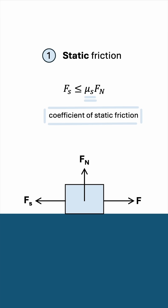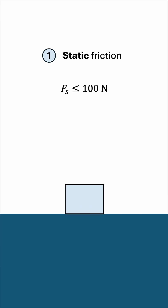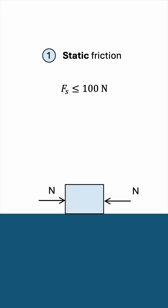For example, say μs times Fn is 100 N for a certain surface. If you were to apply a force of 20 N, the surface would be able to keep the block stationary and counteract your force with 20 N that opposes it. If you were to increase your force up to 50 N, the surface would still have no problem counteracting your force and preventing motion. Same thing holds for 95 N, for example. But if you were to exceed this threshold of 100 N, then the surface would not be able to stop motion anymore, and we would start moving.